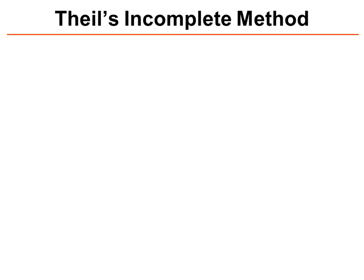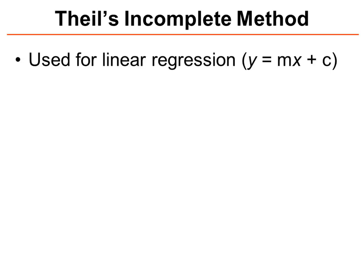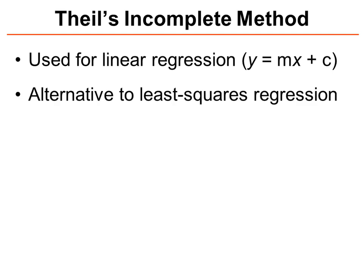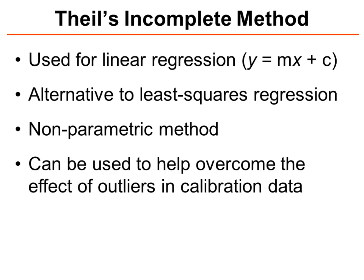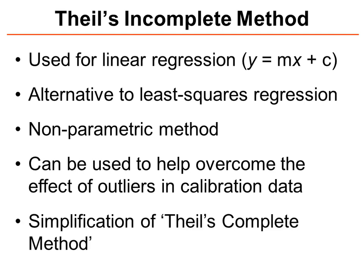In this lecture I'm going to explain Thiel's incomplete method. This method is used for linear regression to fit an equation of the form y equals nx plus c to a set of data. It's an alternative to least squares regression, but an important difference is that this is a non-parametric method, so it doesn't assume that the errors between the data points and the line of best fit are normally distributed. It can be used to help overcome the effect of outliers in calibration data, and it's a simplification of Thiel's complete method.